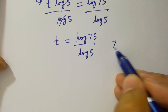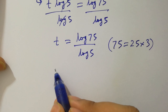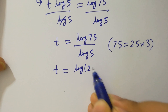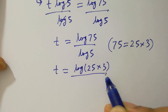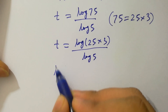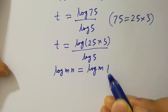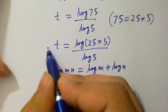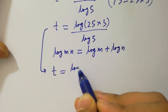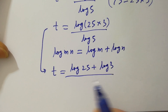As 75 equals 25 times 3, then t will be equal to log of 25 times 3 over log 5. Since log m times n equals log m plus log n, we have t equals log 25 plus log 3 over log 5.